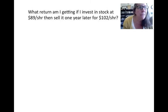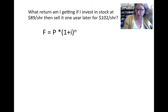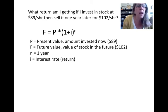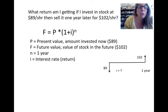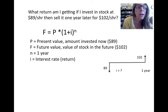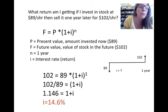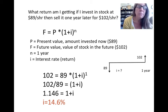For the first problem, we use F = P(1+i)^n. We have a present value of $89, a future value of $102 at the end of one year, and the interest rate is what we're trying to find. Plugging in these numbers and solving algebraically, we find we're getting a 14.6 percent return. That's pretty good — invest $89 now and sell in a year for $102.